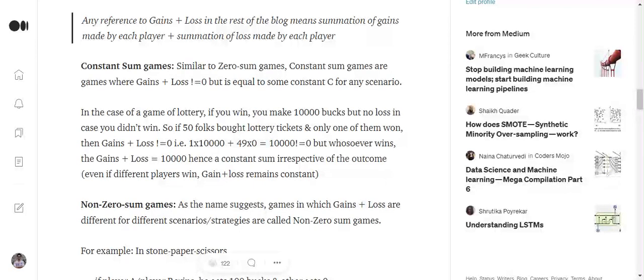Now moving ahead, we must know what is a constant sum game. As we discussed in the case of zero sum games, the total gains plus the total loss made in the entire game by all the players equals to zero.